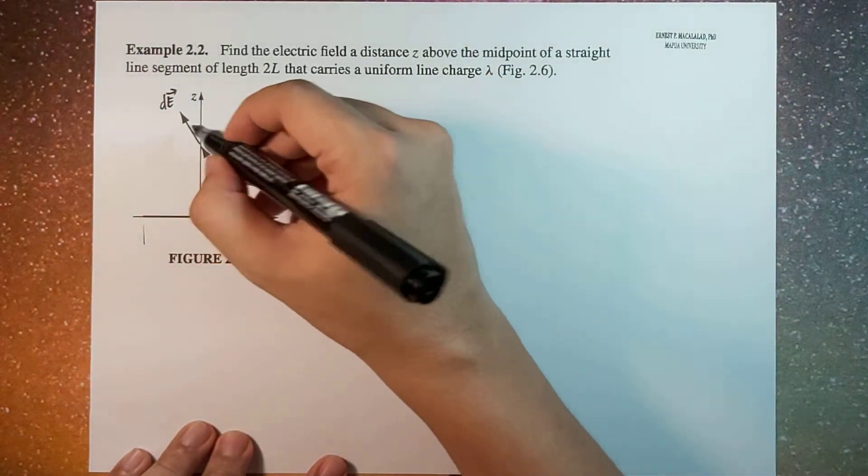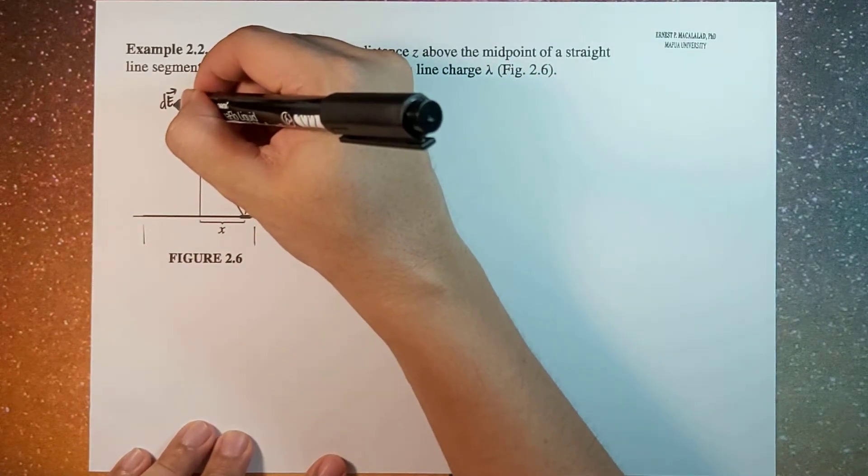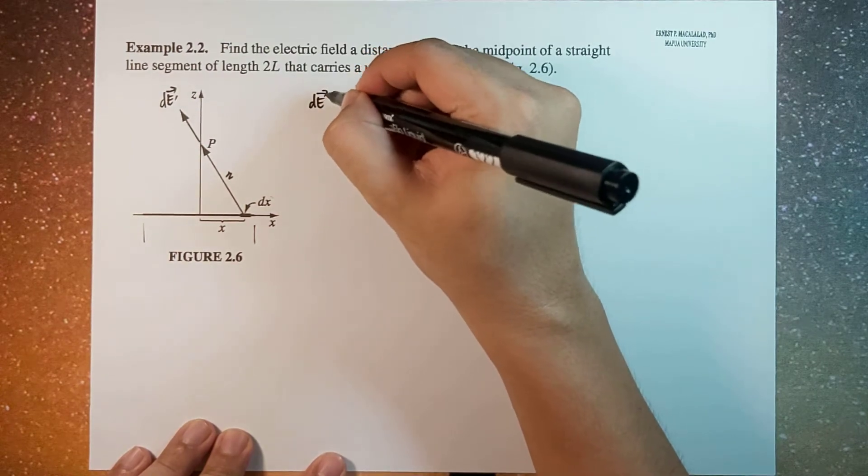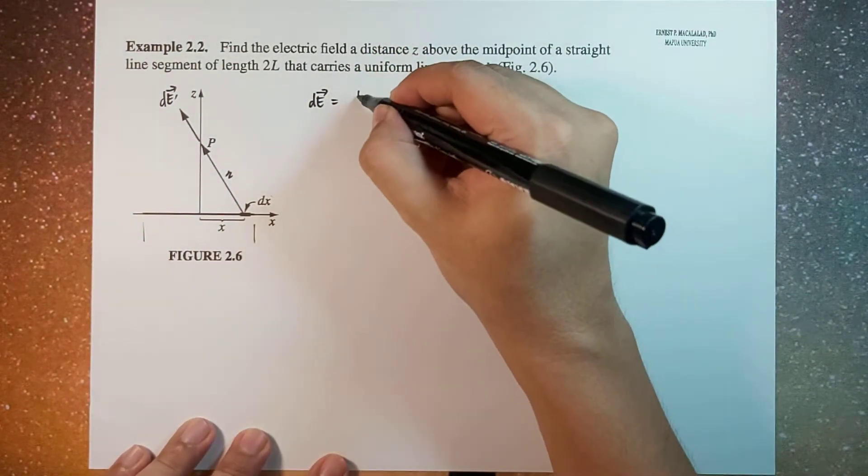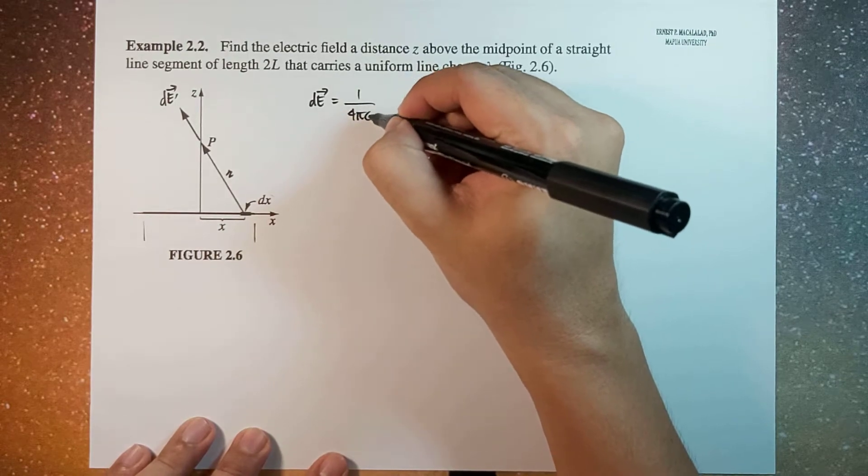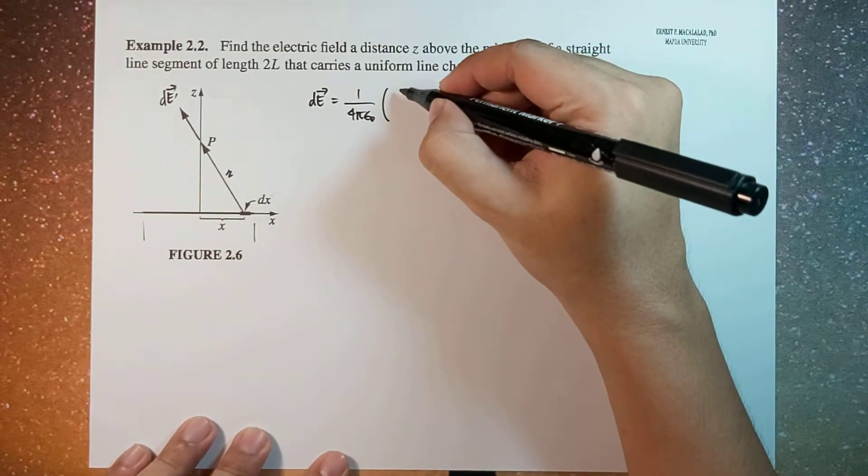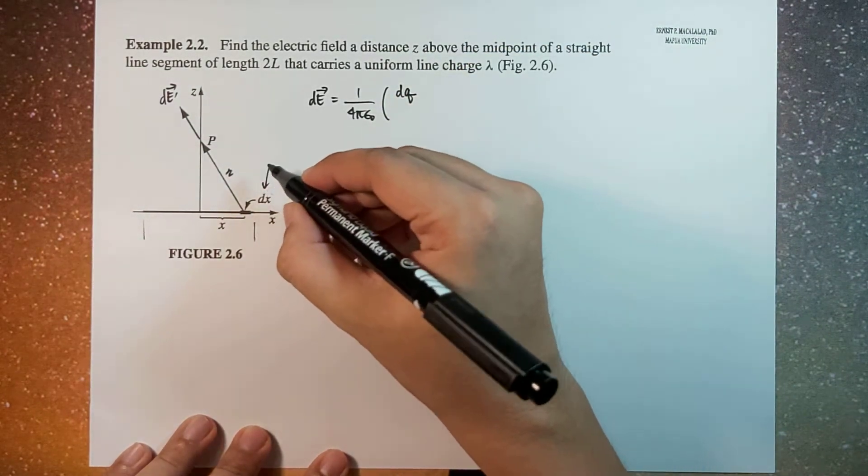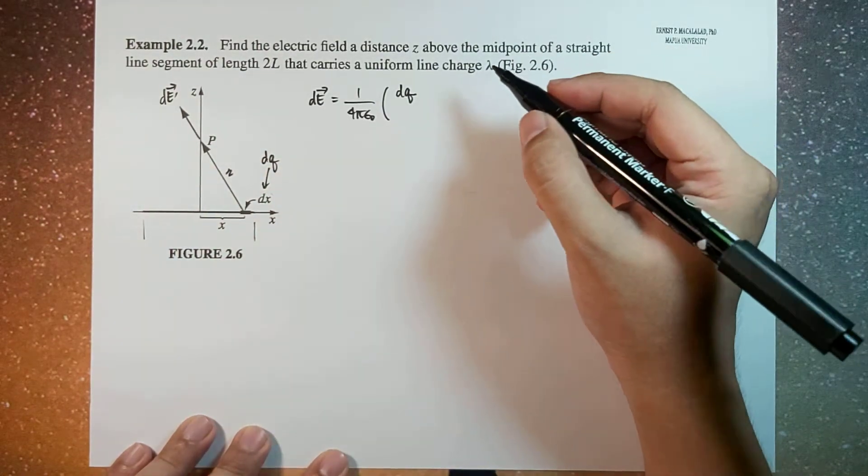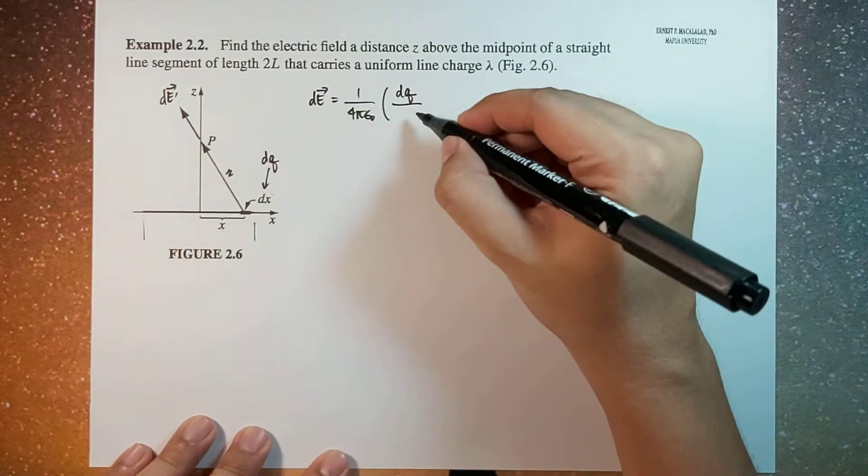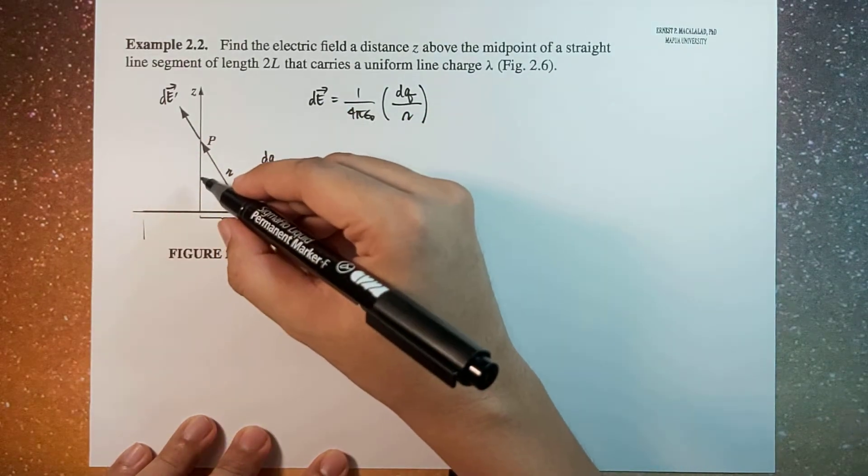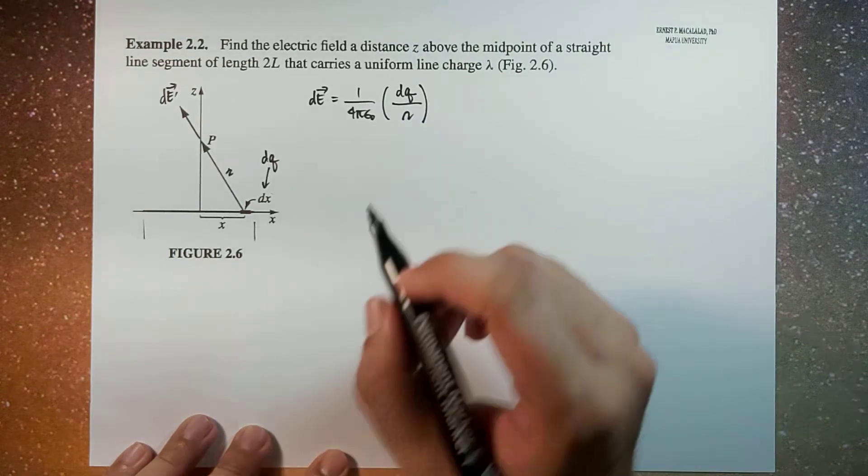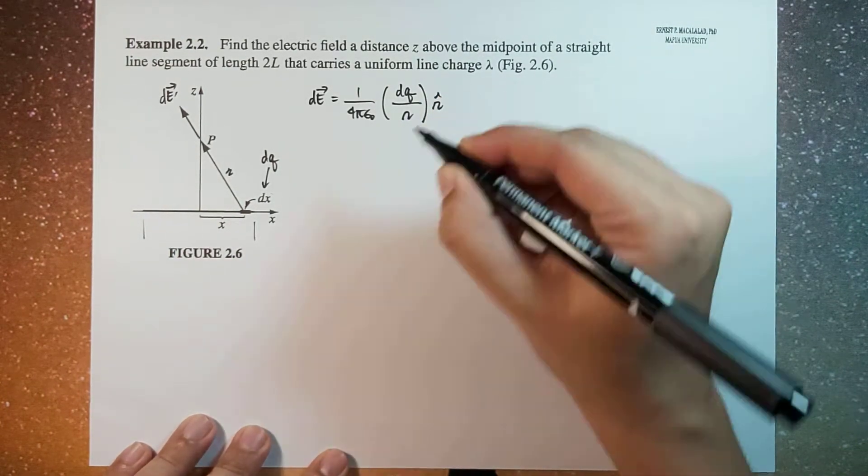Now, this electric field, let's call this dE prime. dE prime will be equal to 1 over 4 pi epsilon naught times the charge dQ, the charge of this line segment, divided by script r squared. And then the direction would be in this direction, so let's call that script r hat.